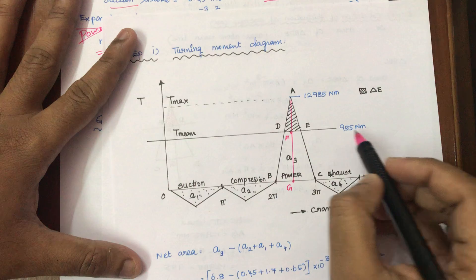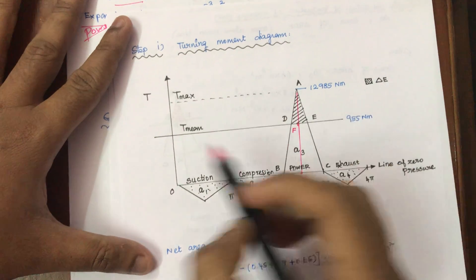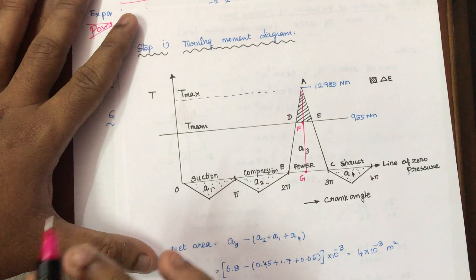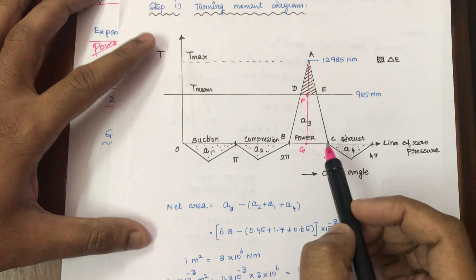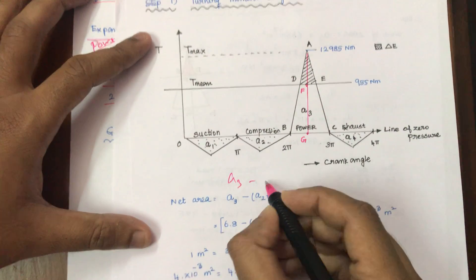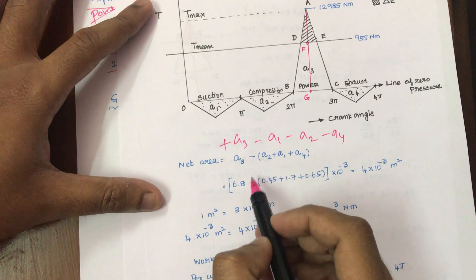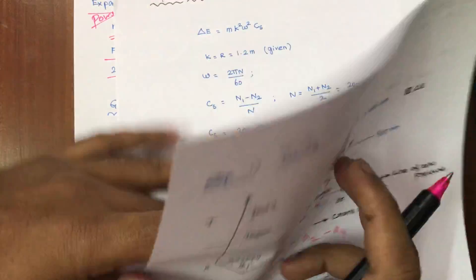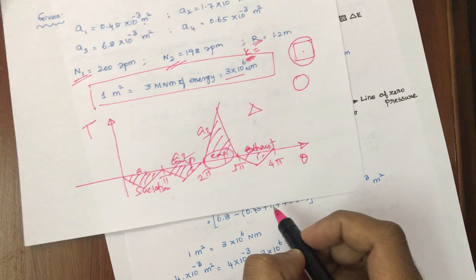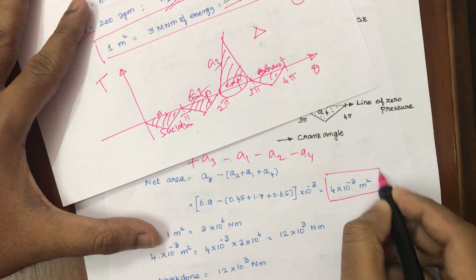Initially we have four triangles, and we can calculate t-maximum, t-minimum, and t-mean values. Looking at the net area: A3 is on the positive side and all others (A1, A2, A4) are on the negative side. So net area = A3 − A1 − A2 − A4. Substituting the given values, we get the net area equal to 4 × 10⁻³ metre squared.